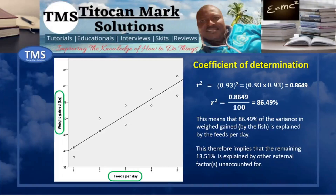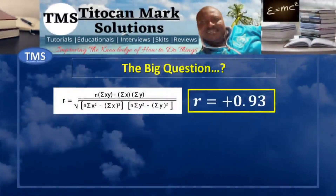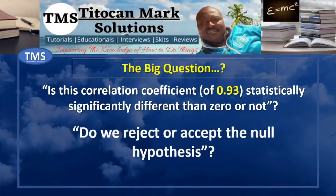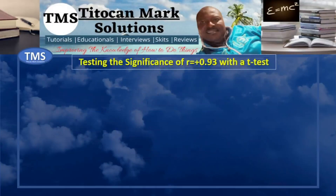This can be attributed to why some fishes have different amounts of weight gained even when fed the same number of times per day — the extra weight gained may have been accounted for by external factors. We have calculated Pearson's correlation coefficient at 0.93. But the big question now is: is this correlation coefficient statistically significantly different than 0 or not? Do we reject or accept the null hypothesis? This brings us to the next step, which is testing the significance of the calculated Pearson's correlation coefficient, by performing a t-test calculation to obtain a t-value and then comparing it with the critical value from the student's t distribution table.